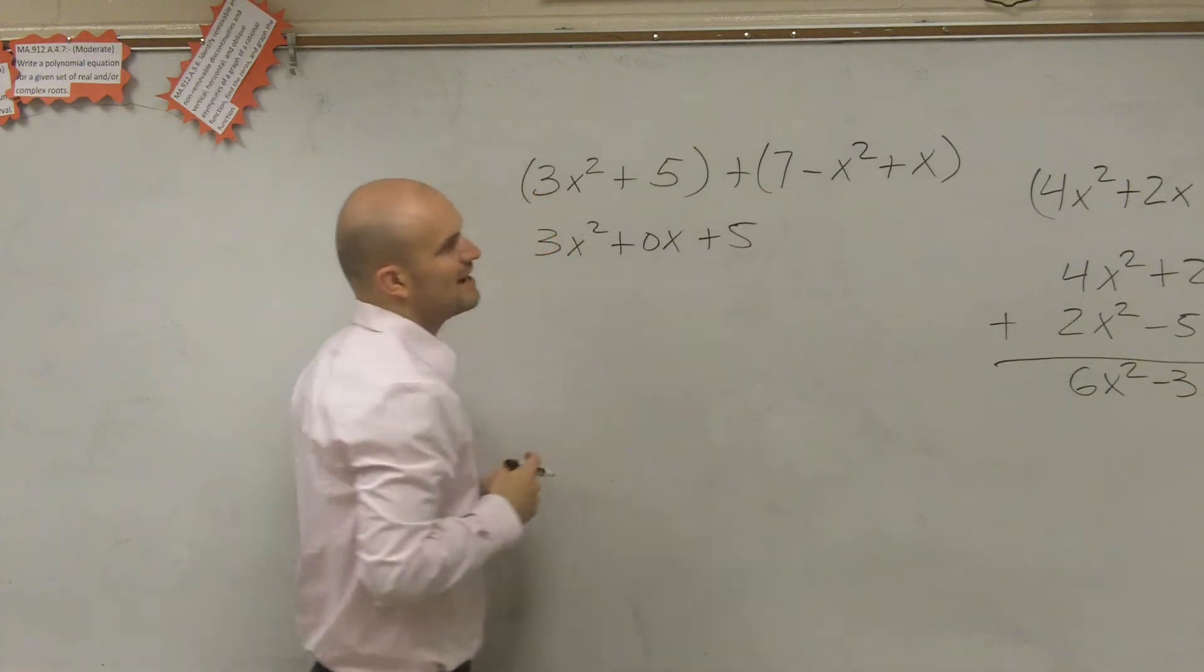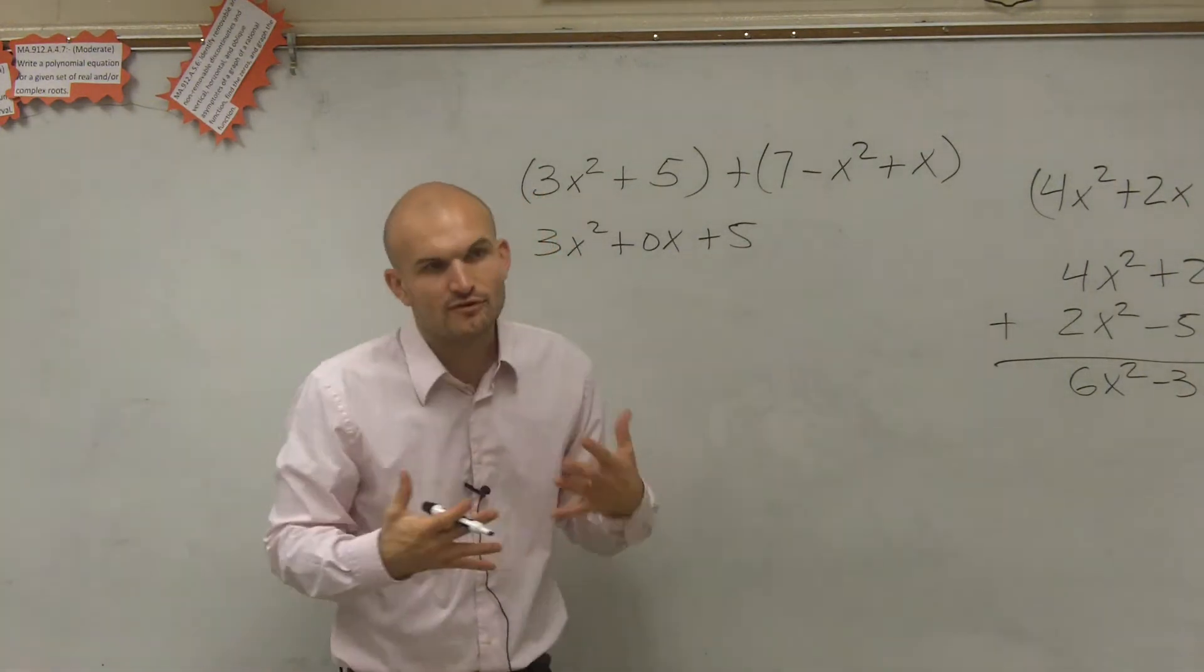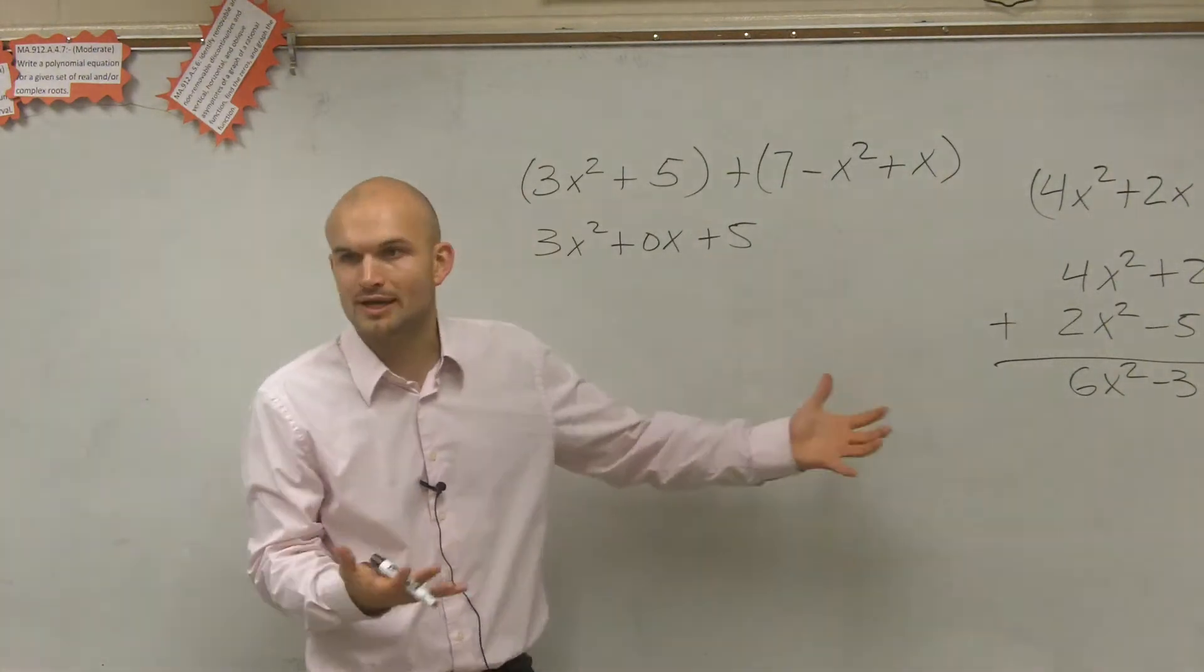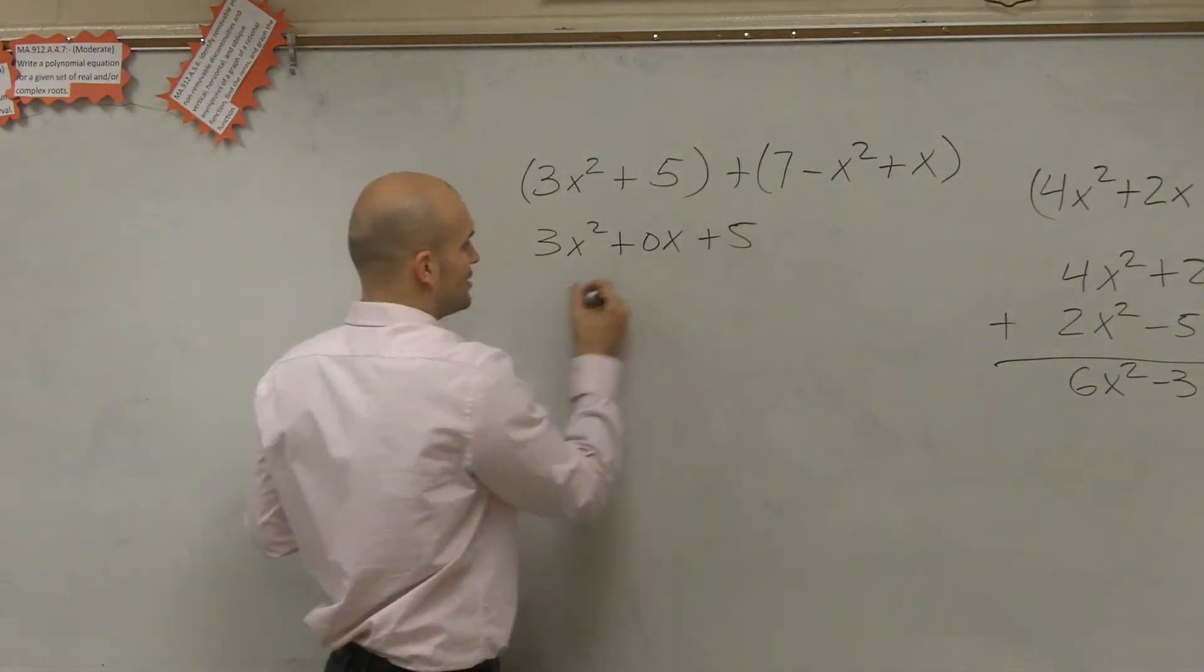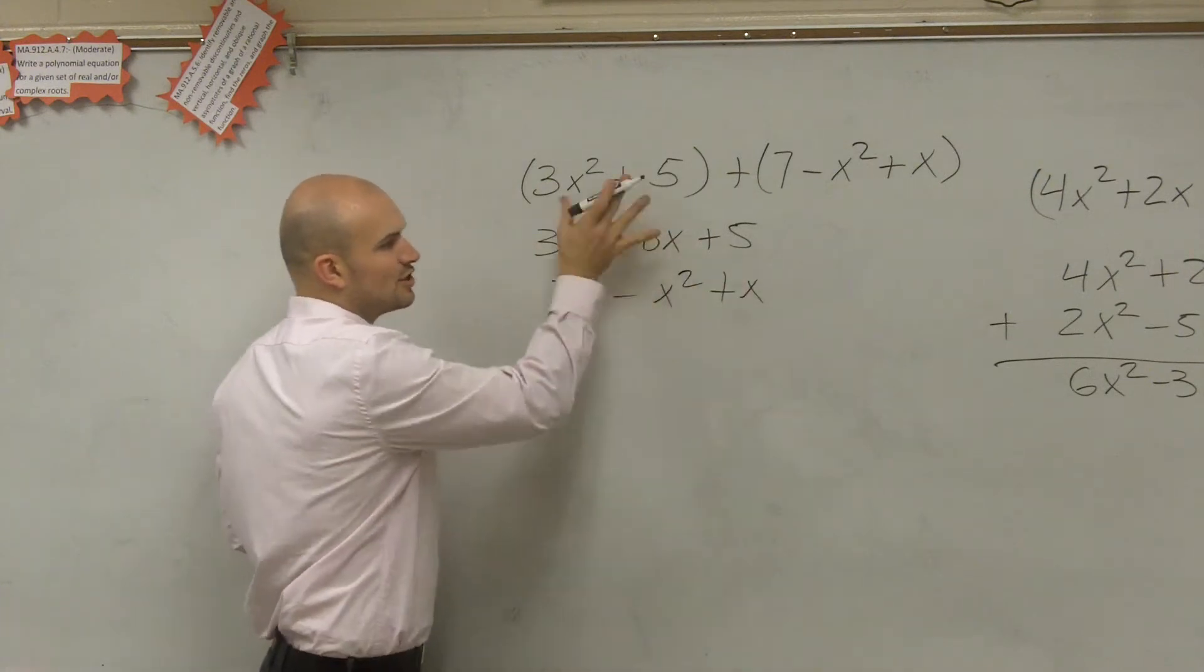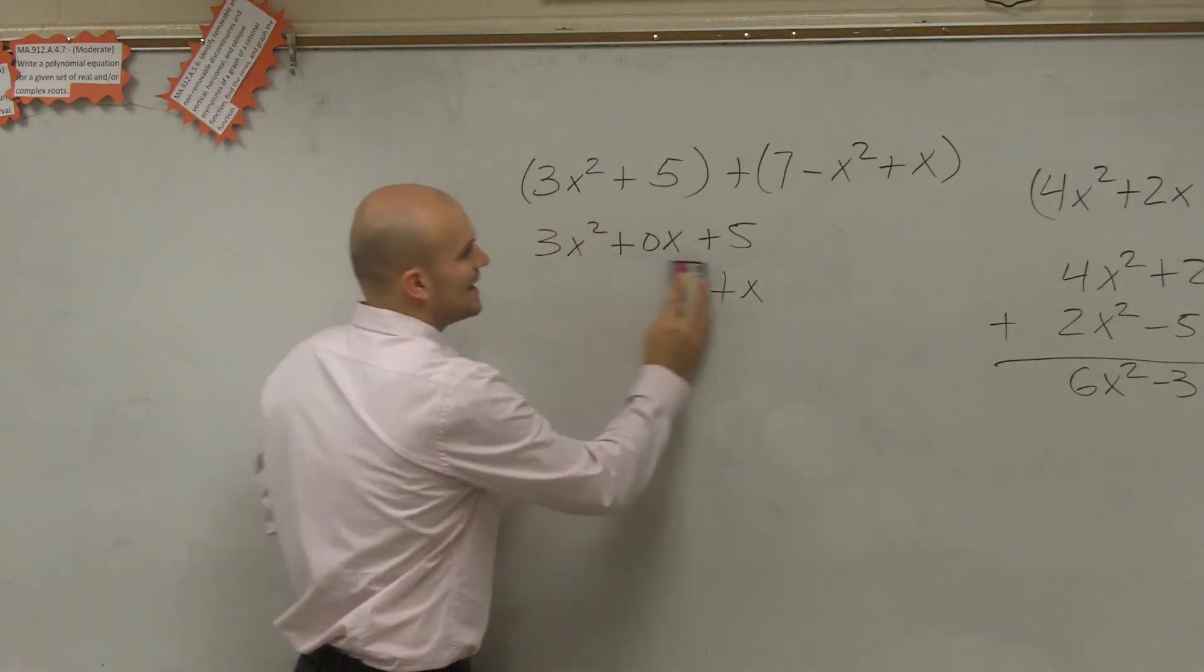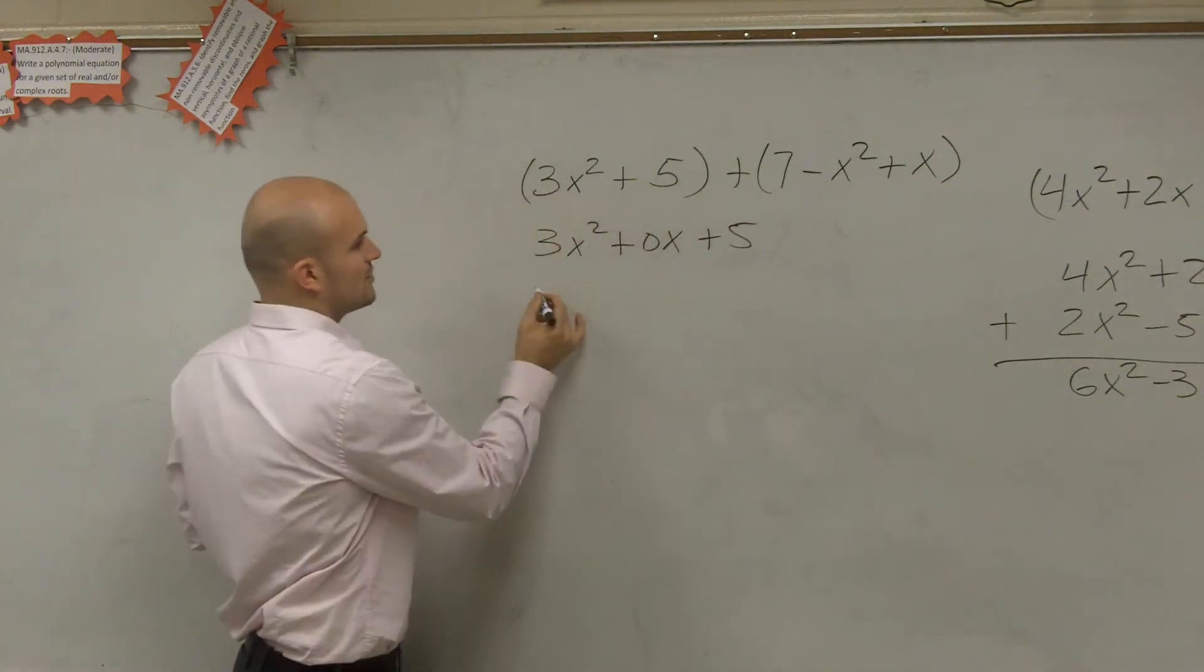And then here, I have 7 minus x squared plus x. And I gave you this problem for a reason, because when doing the vertical method, you can only combine your like terms. So therefore, I'm not going to write this as 7 minus x squared plus x, because then these terms, when I add vertically, aren't the same terms, right? So what I have to do is I have to rearrange my second term.